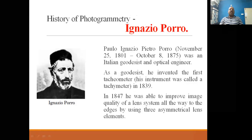Porro was an Italian geodetic and optical engineer. He invented the first tachymeter in 1847 and was able to improve the image quality of lenses, adjusting the system using three systematical lens elements to improve overall image quality.